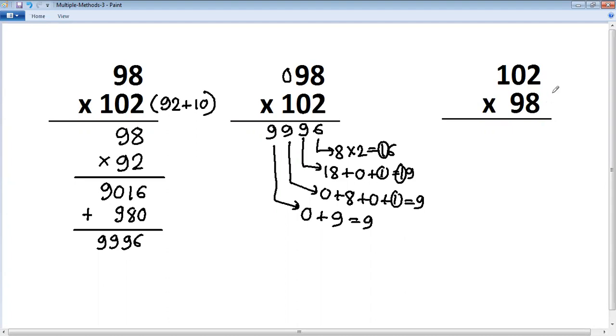Third method which we can consider is series of 9. 98 can be converted as 99 minus 1. So first problem is 102 multiplied by 99. This is series of 9, less number of 9.